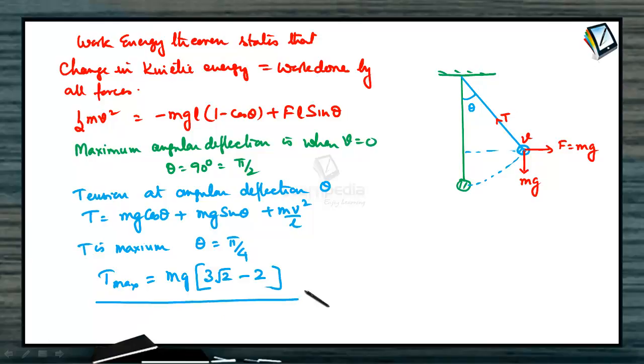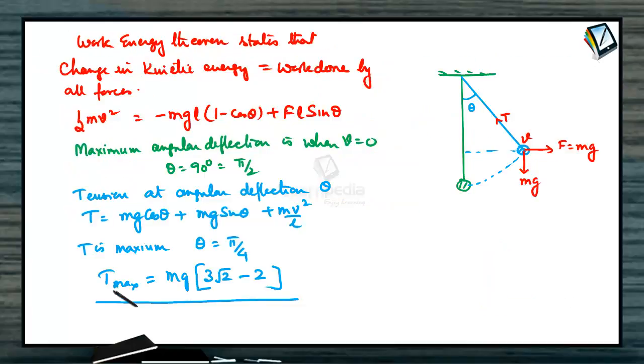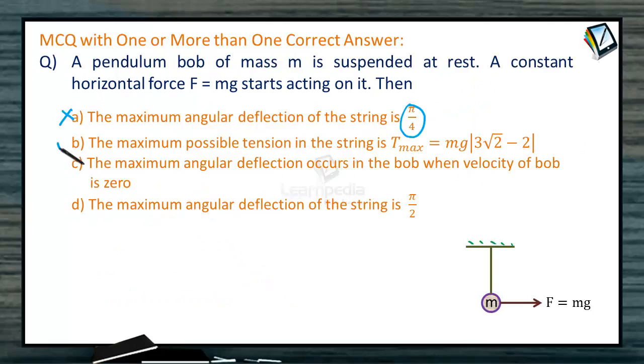So let us see what are the correct options now. Maximum angular deflection of string is pi by 4. It is pi by 2. So wrong option. Maximum possible tension in the string T_max is equal to Mg 3 root 2 minus 2. T_max Mg 3 root 2 minus 2. So right option. So this is our right option.